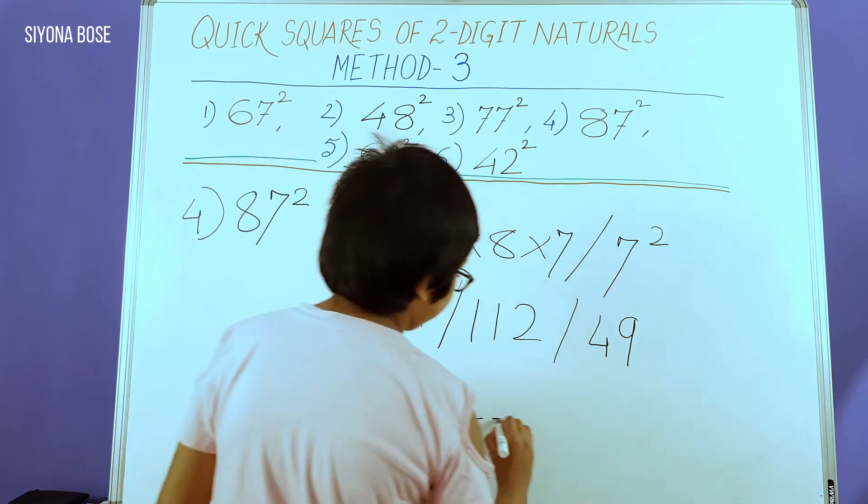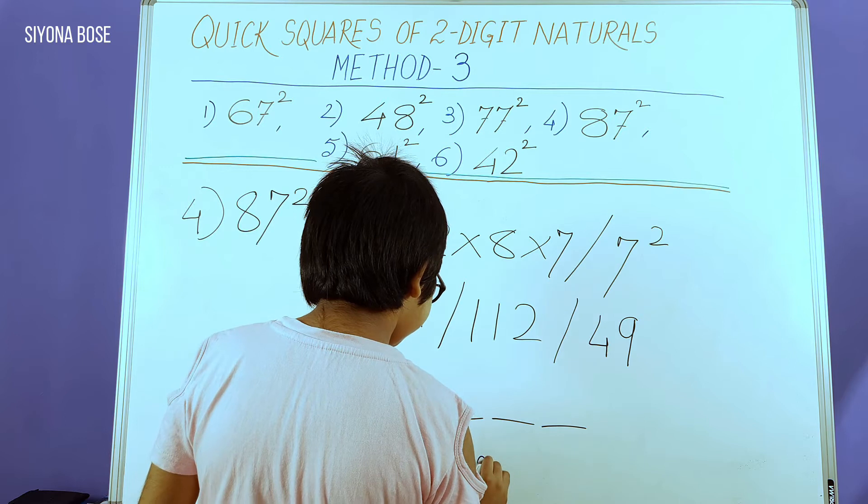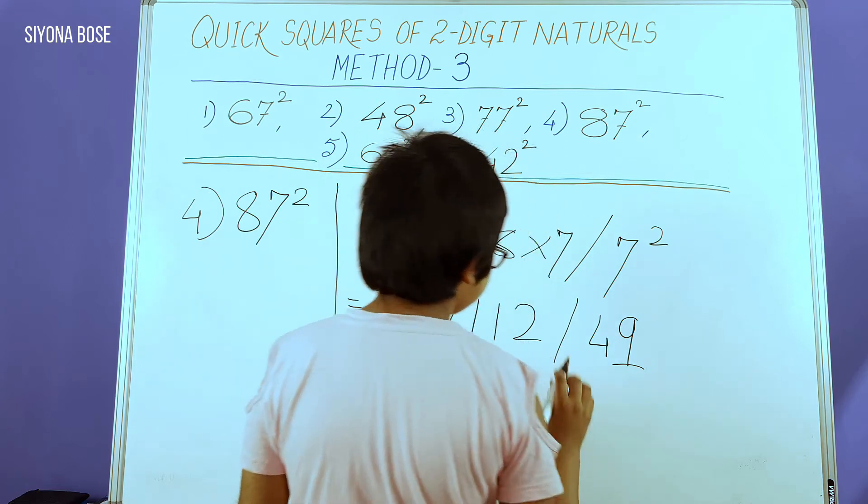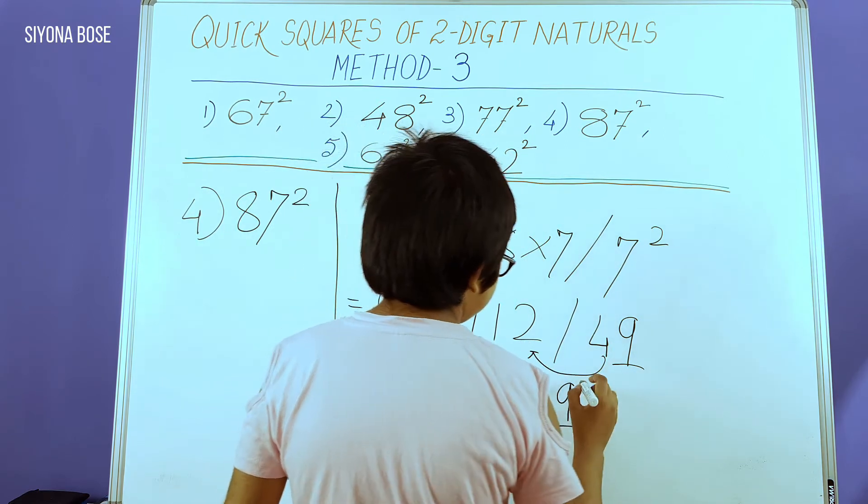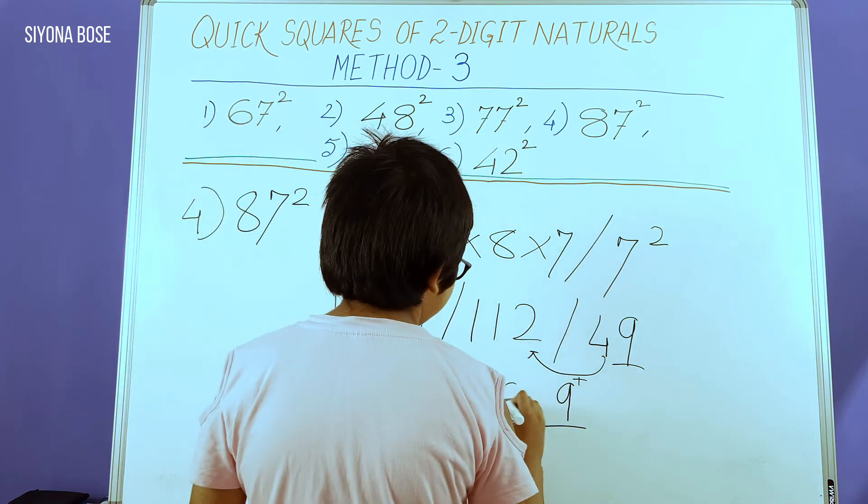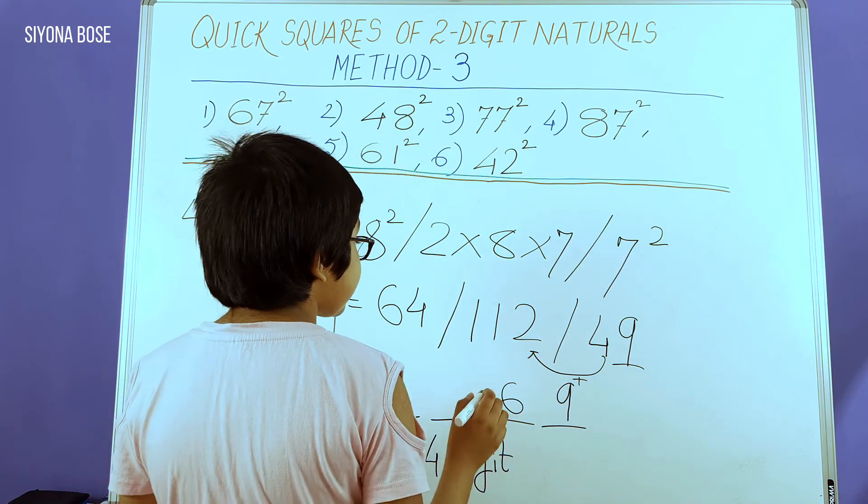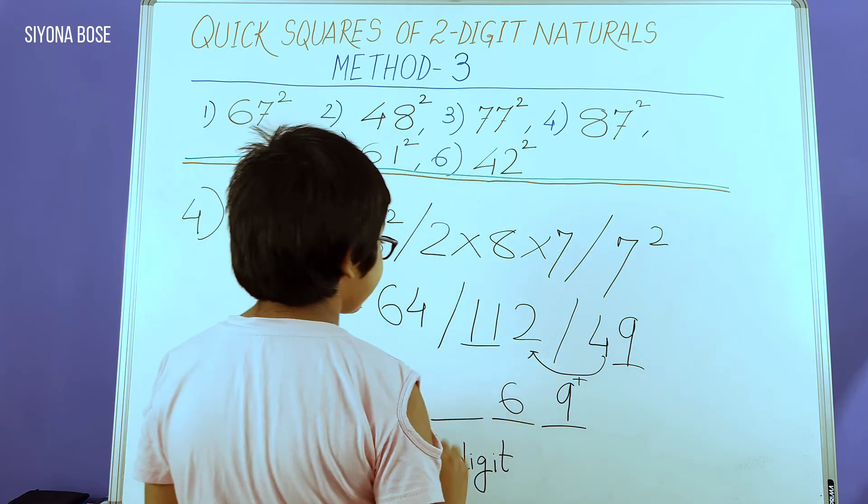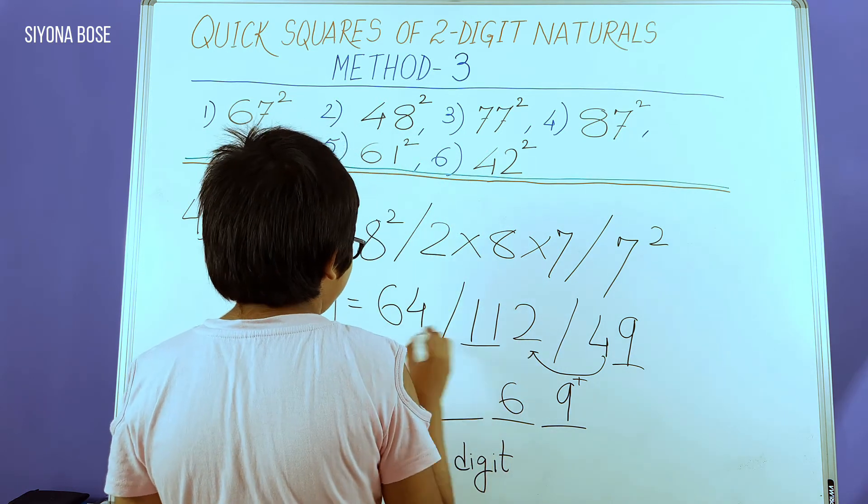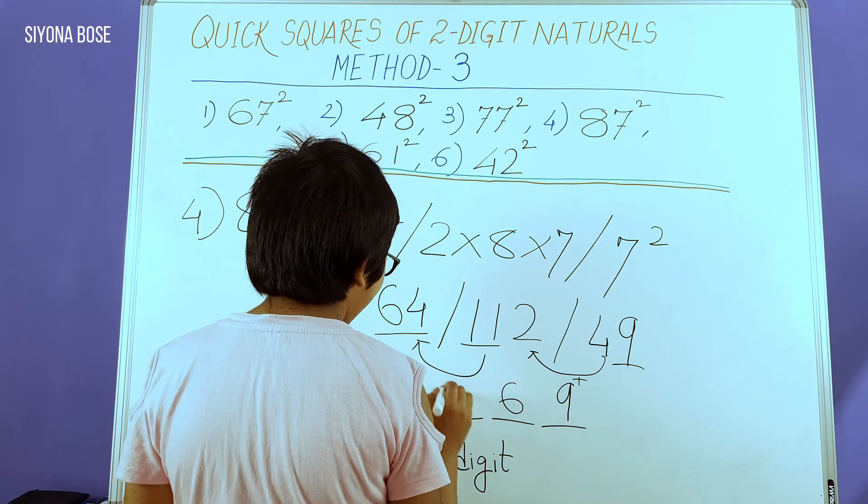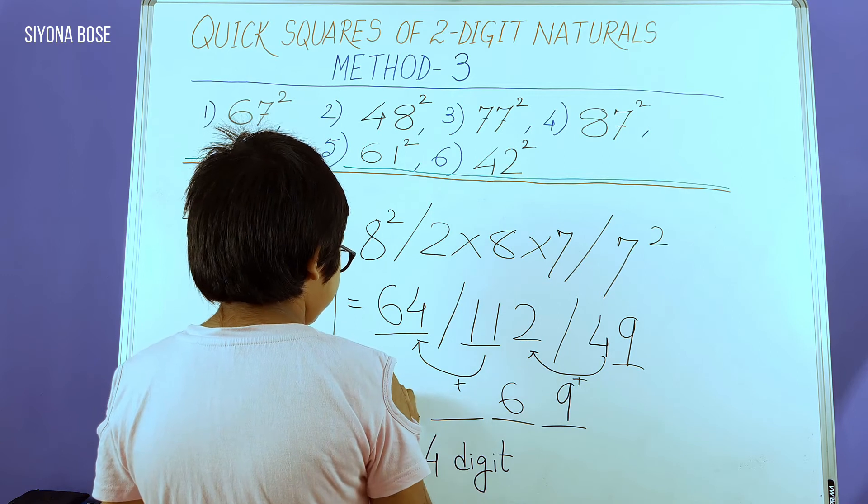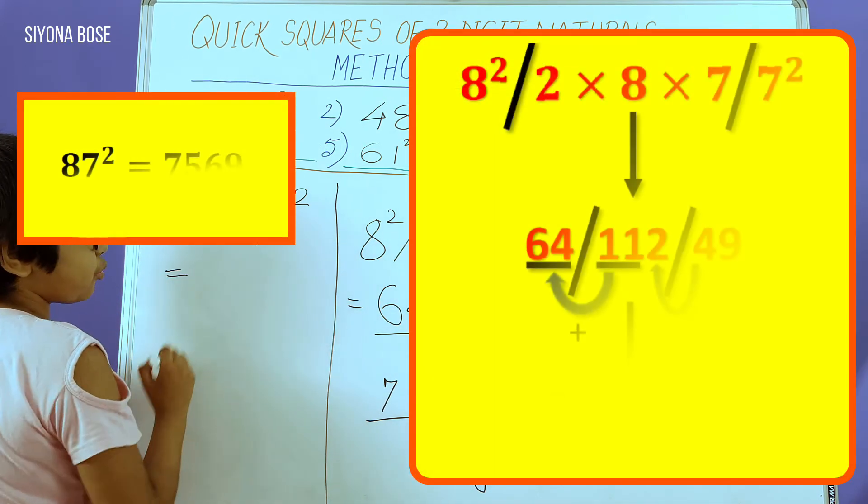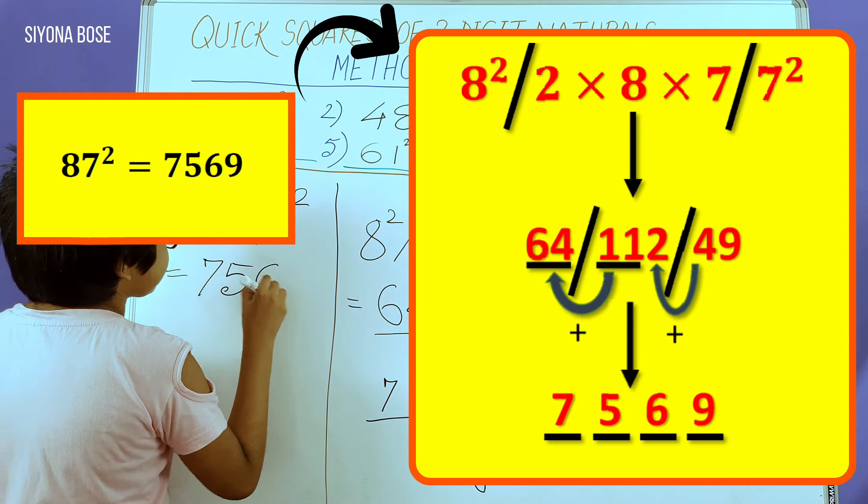4 digits: 4 dashes. We keep the 9. Now 4 has to be added to 2 as usual to get 6. We keep the 6. But here I have an 11 left. And anyway, 6 is not a 2-digit number, so we don't have to worry about carryover. But we have to worry that there are 2 digits. Hence, the 11, the whole 11 has to be added to 64 to get 75. Ultimately, 87 squared is 7569.